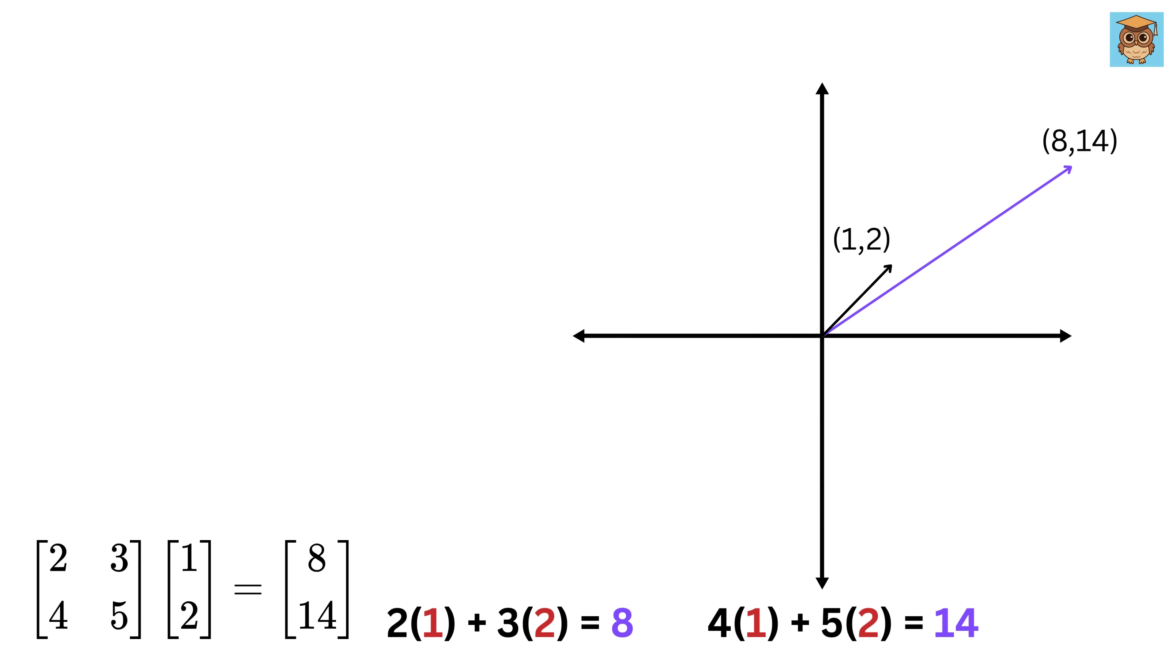Now, we will try to understand matrix multiplication. To do that, quickly tell me what will be the value of 2 times 8 minus 1 times 14? Yes, right, it will be 2. Now, what will be the value of minus 3 times 8 plus 2 times 14? Yes, right again, it will be 4.